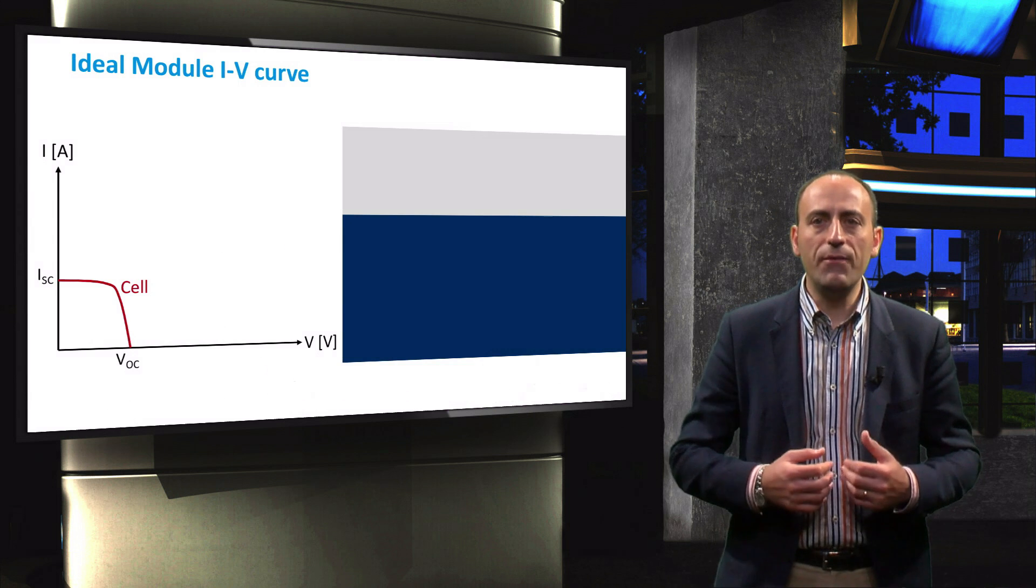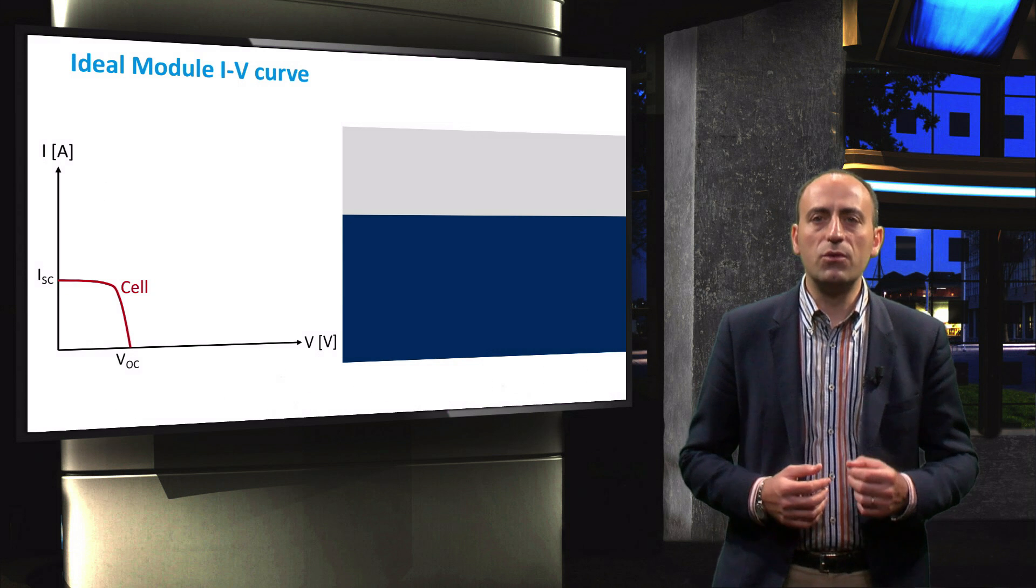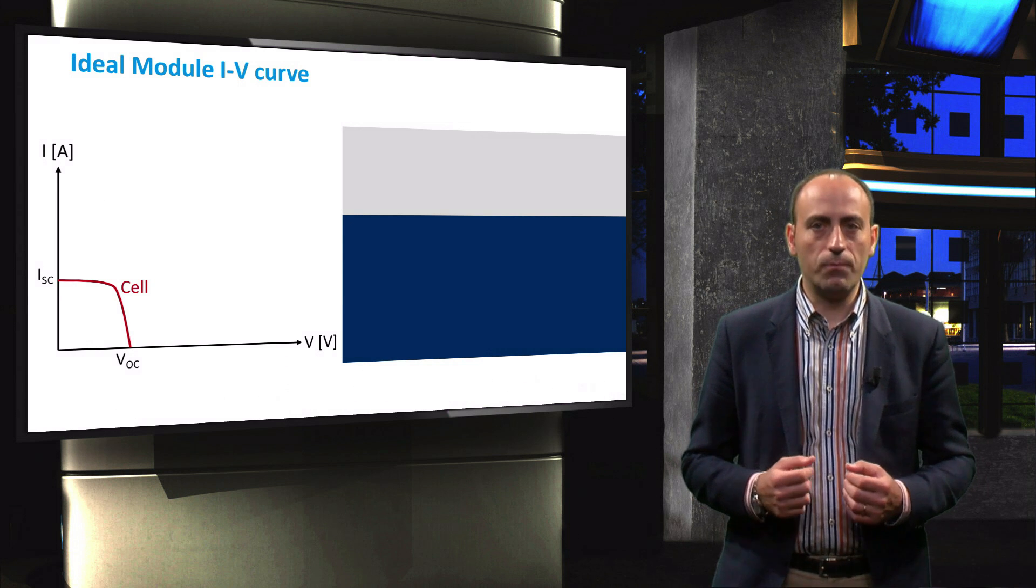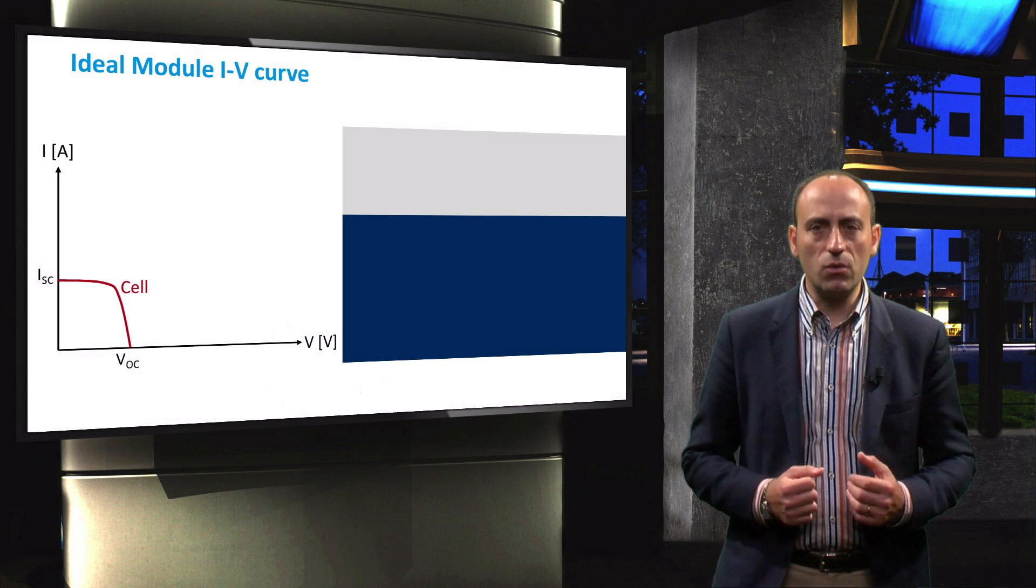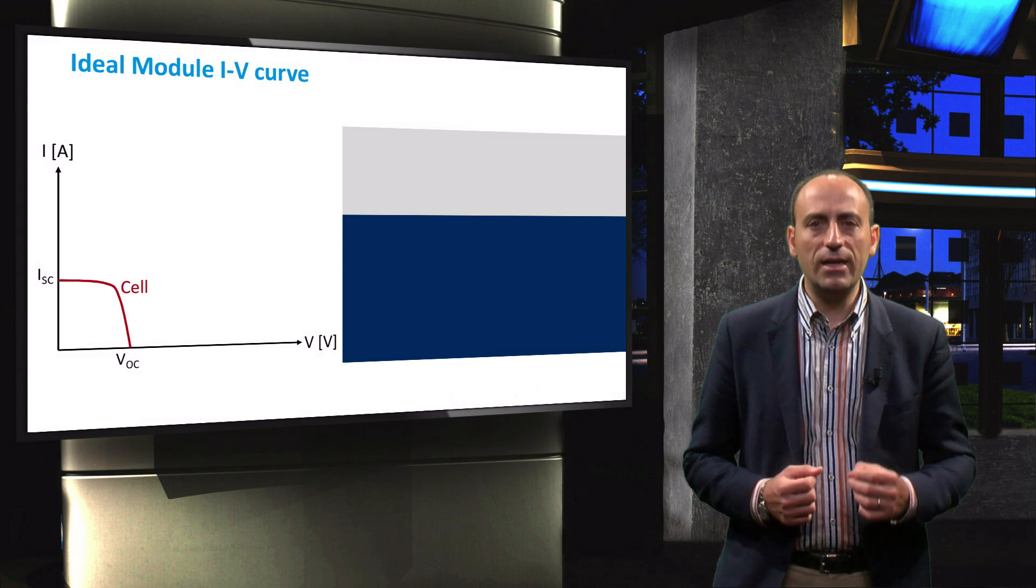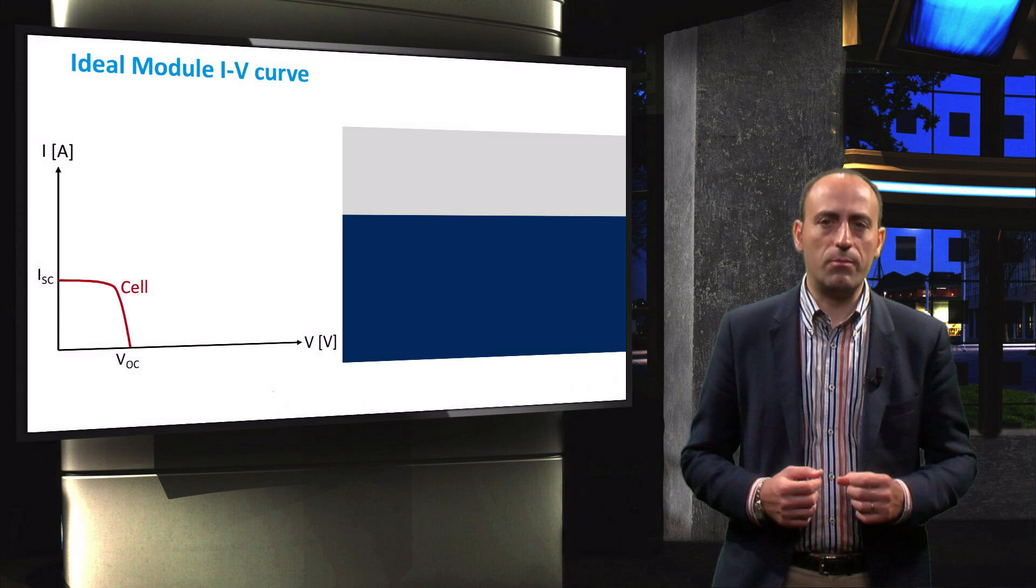To see how the IV curve of a module is different from that of a single cell, let's first look at the IV curve of an ideal module. For this module, we assume that all the interconnected solar cells have identical electrical characteristics and all experience the same insulation and temperature.